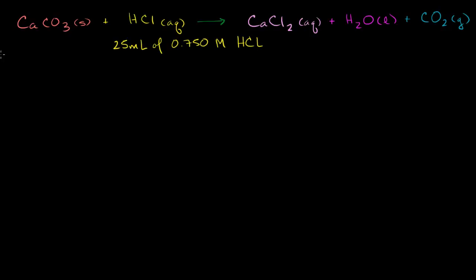On the left-hand side we have one calcium, and on the right-hand side we also have one calcium — so calcium looks good. We have one carbon on the left and one carbon on the right — good. On the left-hand side we have three oxygens, and on the right-hand side we have one oxygen plus two more, so three oxygens — everything looks good so far.